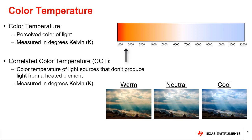At 1500 Kelvin, the light will appear more red. From 5000 Kelvin to 7000 Kelvin, the light will appear as white. At about 8000 Kelvin, the light will appear more blue. Although light appearing more red has a lower color temperature, this type of light is referred to as a warm color. The reciprocal is also true: a light with a high color temperature value is referred to as a cool color.